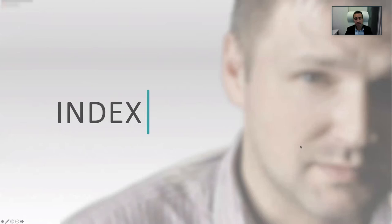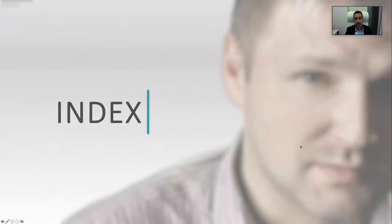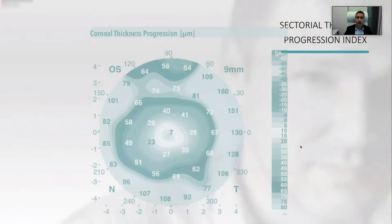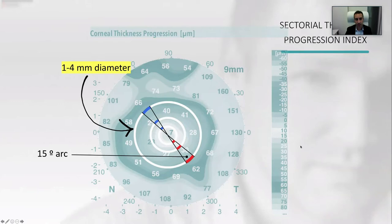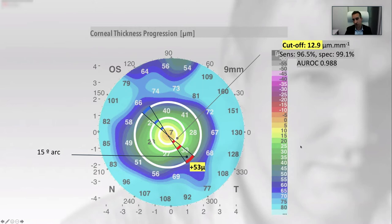We have developed an index to make these maps more numerical and objective. This index has been reported at the European Society and submitted for peer review. We developed a sectorial thickness progression report by looking at sectors of 15 degrees from one, two, and four millimeter diameters, examining their absolute speed in thickness progression and comparing opposite hemimeridians. At one millimeter, the cutoff for maximum sensitivity and specificity is 12.99 microns per millimeter; double that at 24.8 at two millimeters; and 50 at four millimeters diameter.